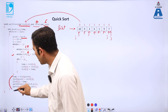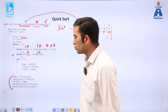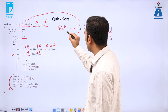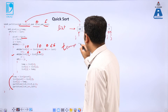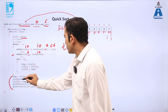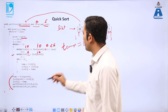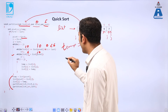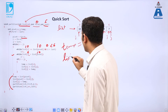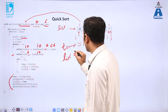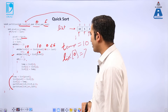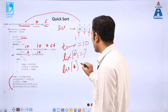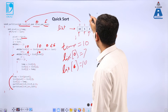Coming out of the loop, the swapping condition executes: temp = list[pivot] (temp = 10), then list[pivot] = list[j] (so position 0 gets the value 7), and list[j] = temp (so position 6 gets the value 10). This is the swap that places the pivot in its correct sorted position.